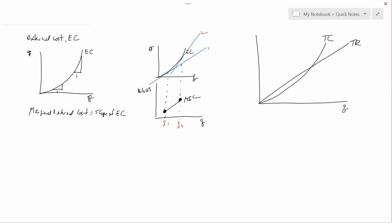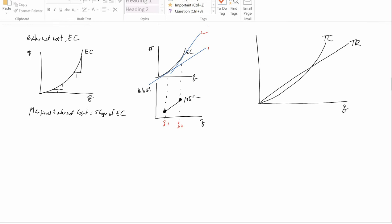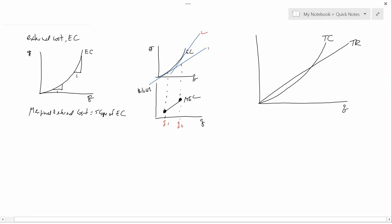So, what the firm wants to do, as we saw last time, was it wants to go to where profit is biggest, which is going to be roughly here, where the gap between total revenue and total cost is the largest in a positive direction.